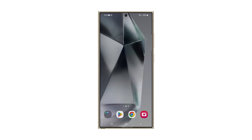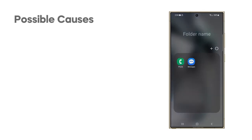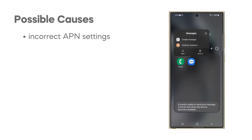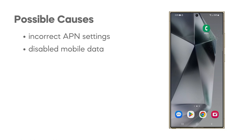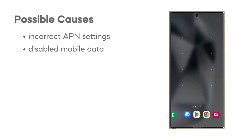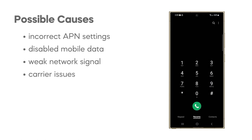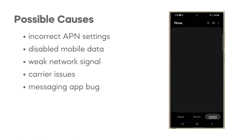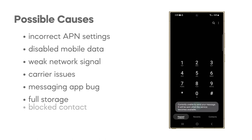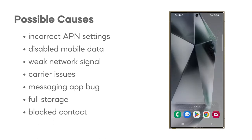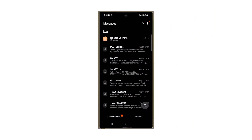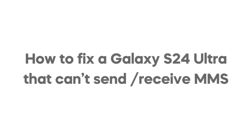A Galaxy S24 Ultra might be unable to send or receive MMS due to several reasons. Incorrect APN settings or mobile data being turned off can disrupt MMS functionality. Other factors could include weak network signal, carrier issues, bugs in the messaging app, full device storage, or the contact number being blocked on the device. In this video, we will show you how to fix a Galaxy S24 Ultra that can't send or receive picture messages or MMS.